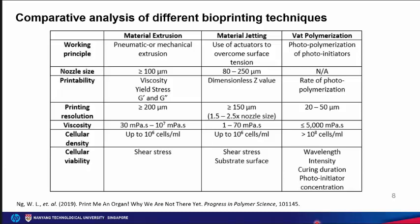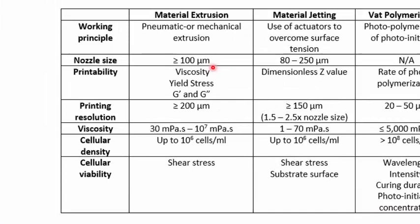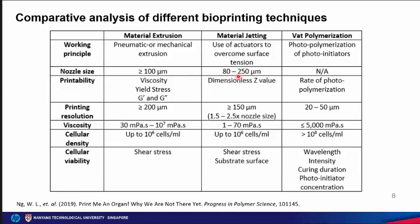In a comparative analysis, the working principle for material extrusion can be either pneumatic or mechanical. Material jetting requires actuators to overcome surface tension. Vat polymerization requires photopolymerization of photo-initiators. For nozzle size, material extrusion uses 100 microns or greater, material jetting typically ranges from 80 to 250 microns, and vat polymerization is a nozzle-less technique where light directly cures resin within the printing tray.